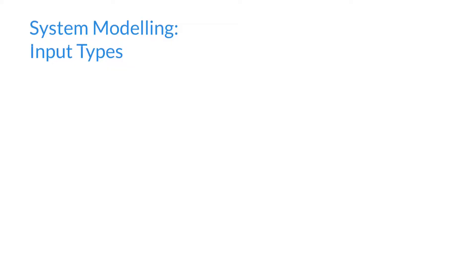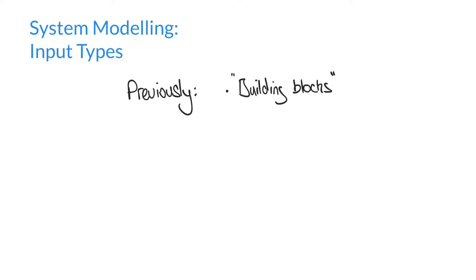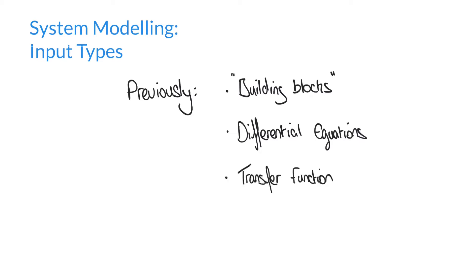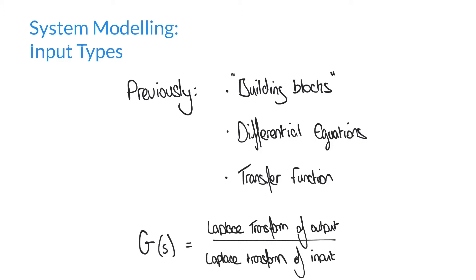Hello and welcome to this video on input types in control systems. By this point, if you've been following our videos, we've seen how to assemble the building blocks of electrical and mechanical systems in order to form differential equations, and then how to apply the Laplace transform to these equations, rearranging this to find the transfer function. In our previous video, we said that the transfer function G of s is equal to the Laplace transform of the output divided by the Laplace transform of the input.